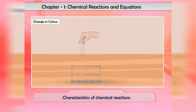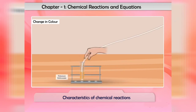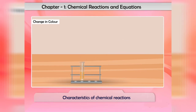When sulfur dioxide gas is passed through acidified potassium dichromate solution, the orange color of potassium dichromate solution changes to green.